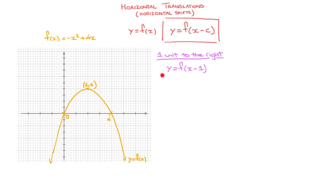To obtain this new curve from y equals f of x, we add one — the amount we're subtracting from x — to the x coordinate of every single point along the curve. Starting with the vertex, which has coordinates (2, 4), I add one to the x coordinate: two plus one is three. So this vertex ends up at coordinates (3, 4). Notice the y coordinate stays the same — this is a horizontal transformation, so it won't affect the y coordinates.